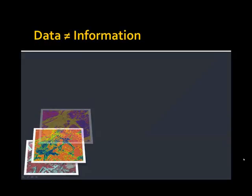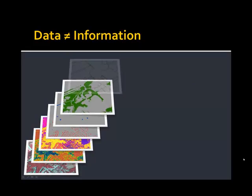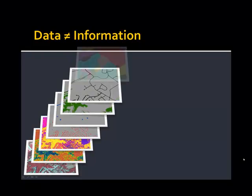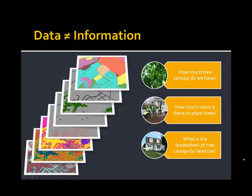We have lots of good data out there — remotely-sensed data, aerial and satellite imagery, LiDAR data sets, and a whole host of vector data sets: building footprints, road polygons, and cadastral data sets. Yet we lack some really basic information in our green infrastructure, and we can't answer simple questions such as how much tree canopy do we have, how much room is there to plant trees, or what is the breakdown of tree canopy by different land use types.